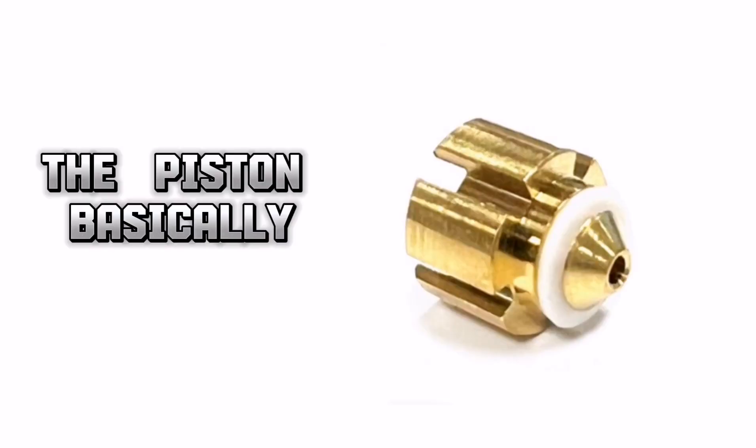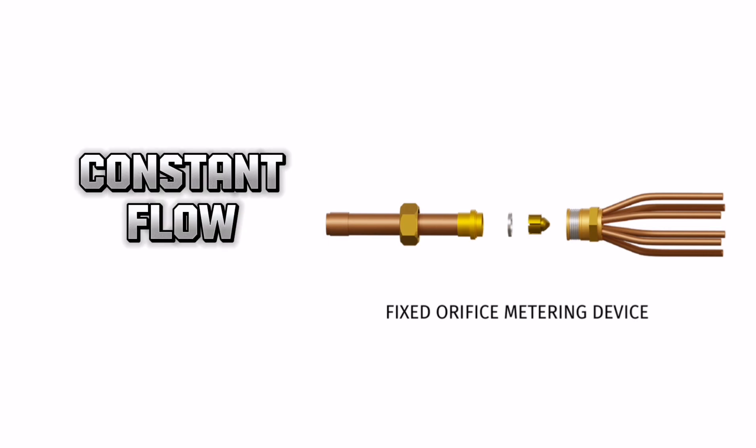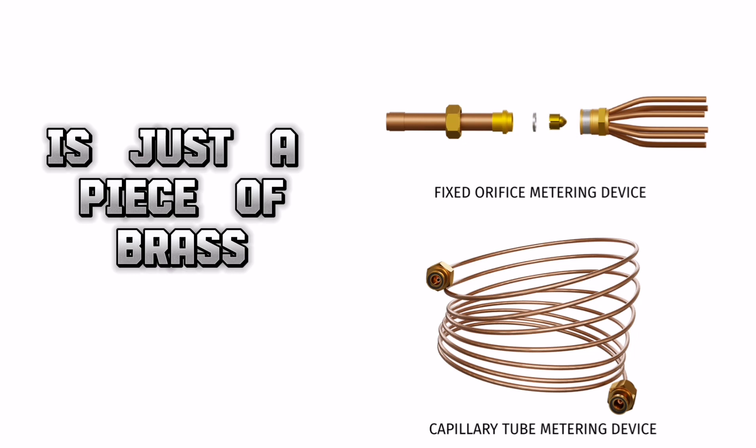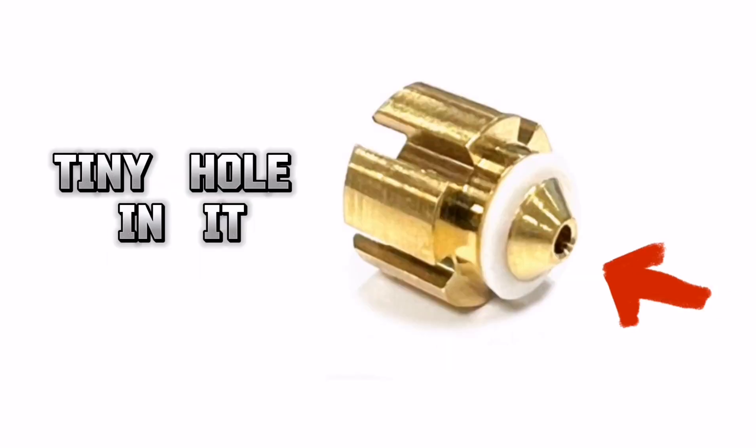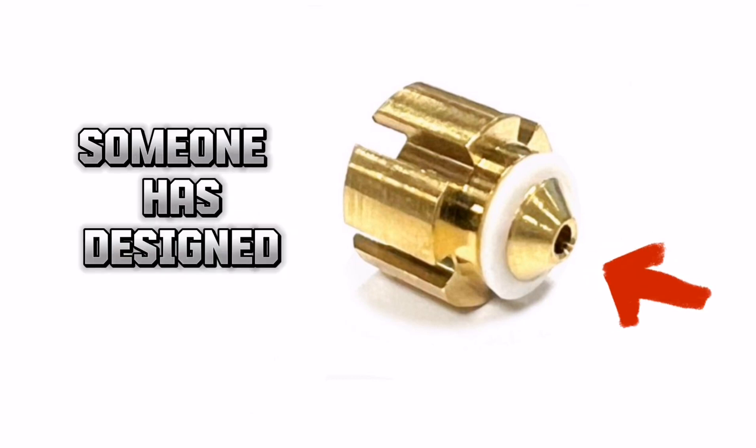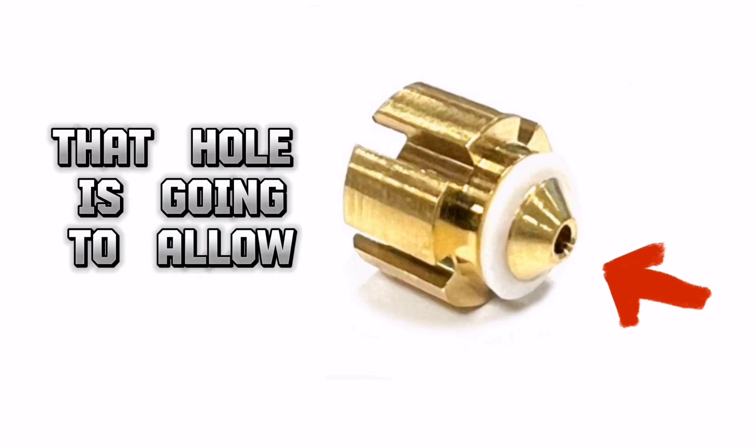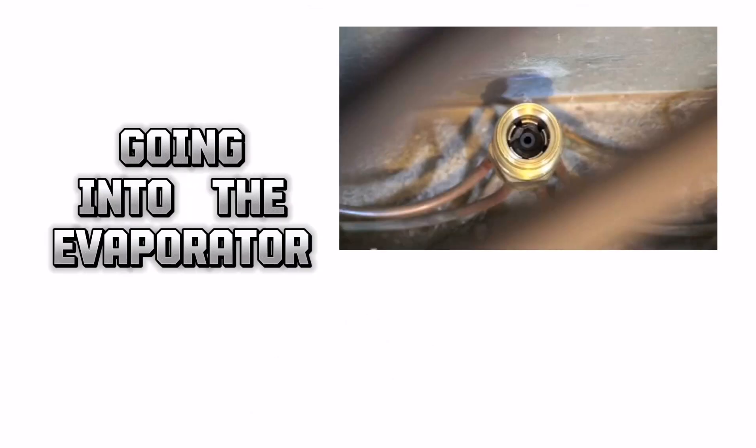The other one is the piston. The piston, basically, it's going to be maintaining constant flow, just like the capillary tube. And all it is, is just a piece of brass that they have machined, and it has a little tiny hole in it. Now, that hole, some engineer, someone has designed it so that that hole, it's going to allow that specific flow going into the evaporator.